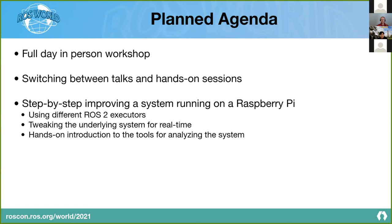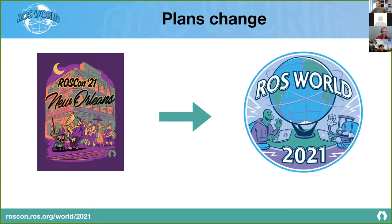We originally planned a full-day in-person workshop with alternating talks and hands-on sessions using a Raspberry Pi setup, where participants could step by step improve the system using different ROS 2 executors, tweak it for real-time, and get a hands-on introduction to analysis tools. But plans changed — instead of an eight-hour in-person workshop, we now have a four-hour virtual workshop.